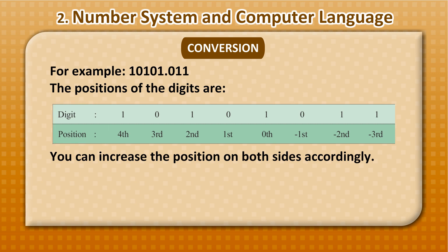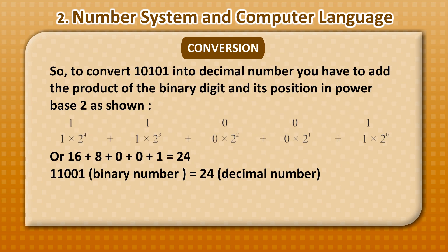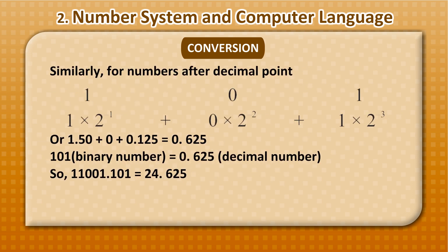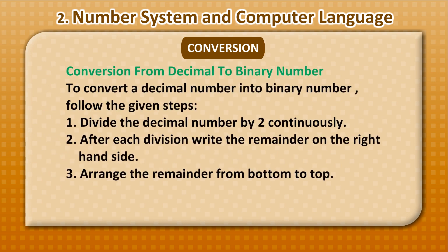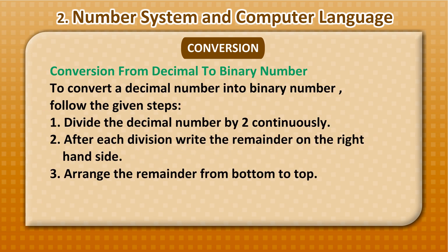The positions of the digits are digit positions. You can increase the position on both sides accordingly. So, to convert 10101 into decimal number, you have to add the product of the binary digit and its position in power base 2 as shown. Similarly, for numbers after decimal point.